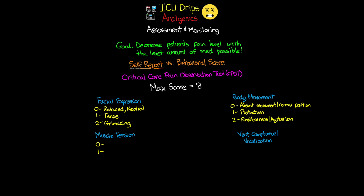For muscle tension, we score 0, 1, or 2. A score of 0 is relaxed — no resistance to any passive movements. A score of 1 is tense or rigid, where you feel resistance when trying to do passive movements. A score of 2 is very tense or rigid, where the patient has strong resistance to passive movements or is unable to complete them at all.